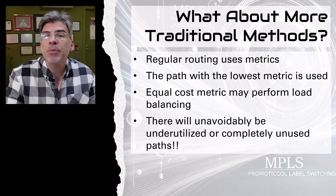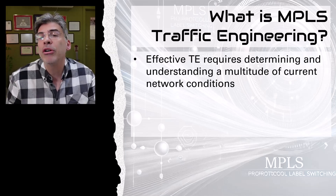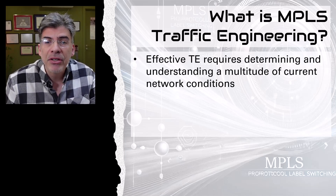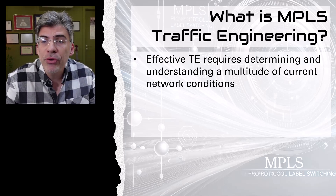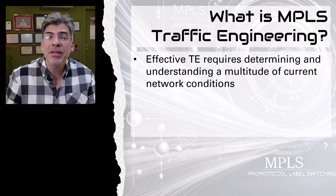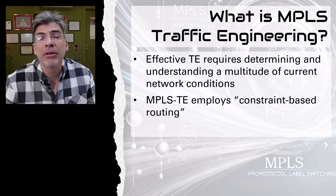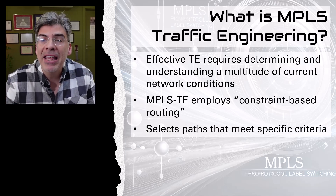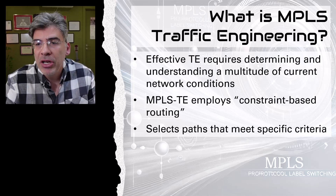Now let's put all of this into perspective as we talk about MPLS traffic engineering. To optimize the efficiency of a network it's necessary to determine and understand the current network conditions — which interfaces are heavily utilized, which are underutilized, and what available bandwidth exists across the whole network. From this information, TE can ensure that resources are allocated intelligently to maximize performance and reliability. MPLS TE employs a technique called constraint-based routing, which goes beyond traditional shortest-path routing. Instead of simply choosing the shortest route, MPLS TE selects paths that meet specific criteria that you as an administrator can define.